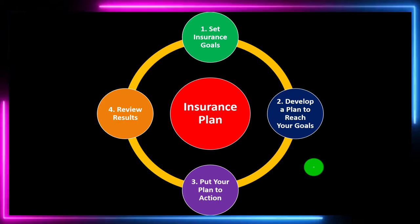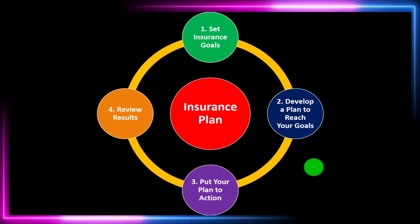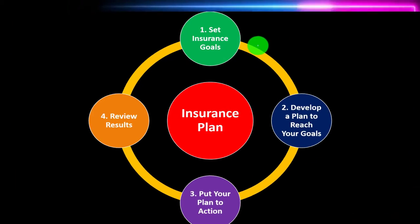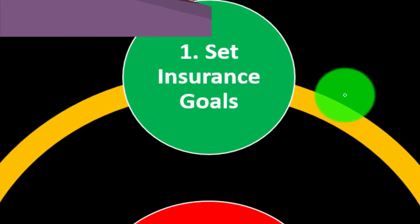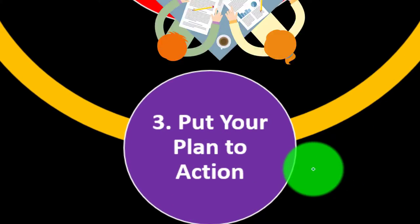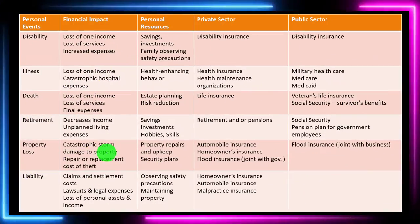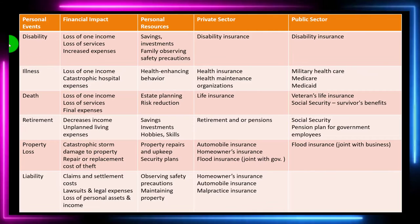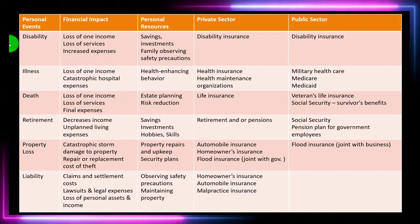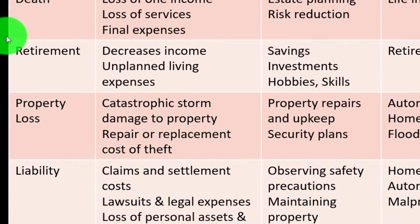Insurance falls into the long-term category of decisions because they deal with future periods and predictions. The decision-making process looks like this: set our goals, develop a plan to reach the goals, put the plan into action, review the results, and then start it over again.